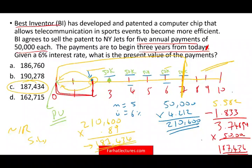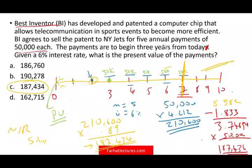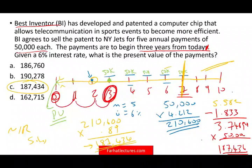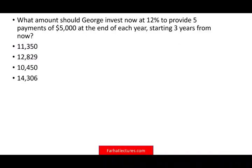I like to do it both ways so you are comfortable with both. Remember: the payments are to begin three years from now, meaning zero, one, two, three — the payment starts three years from now. Now let's take a look at the second question. What amount should George invest now at 12% to provide five payments of $5,000 at the end of each year, starting three years from now?